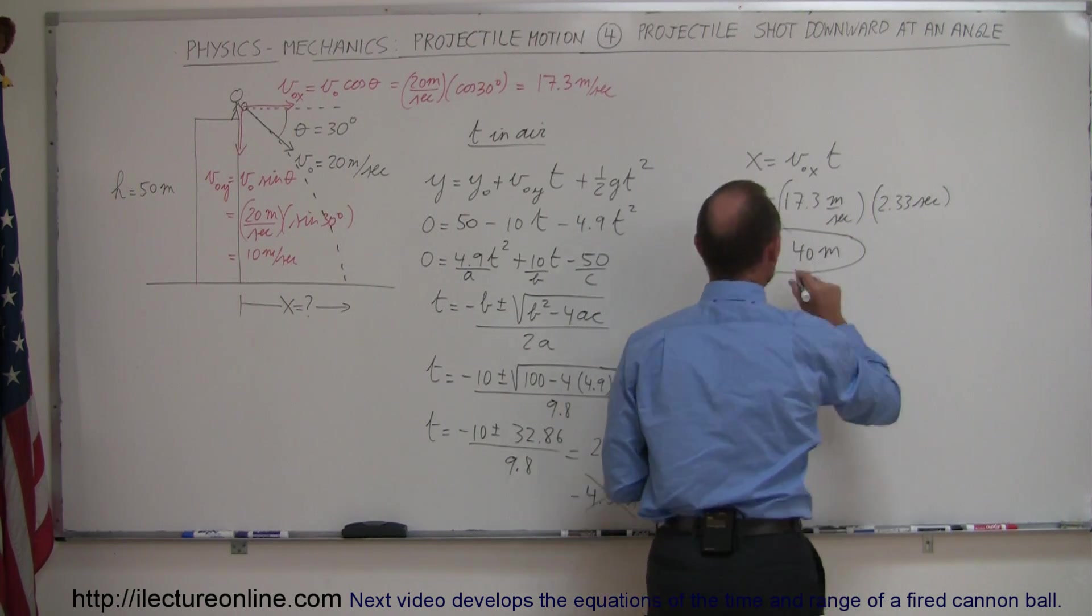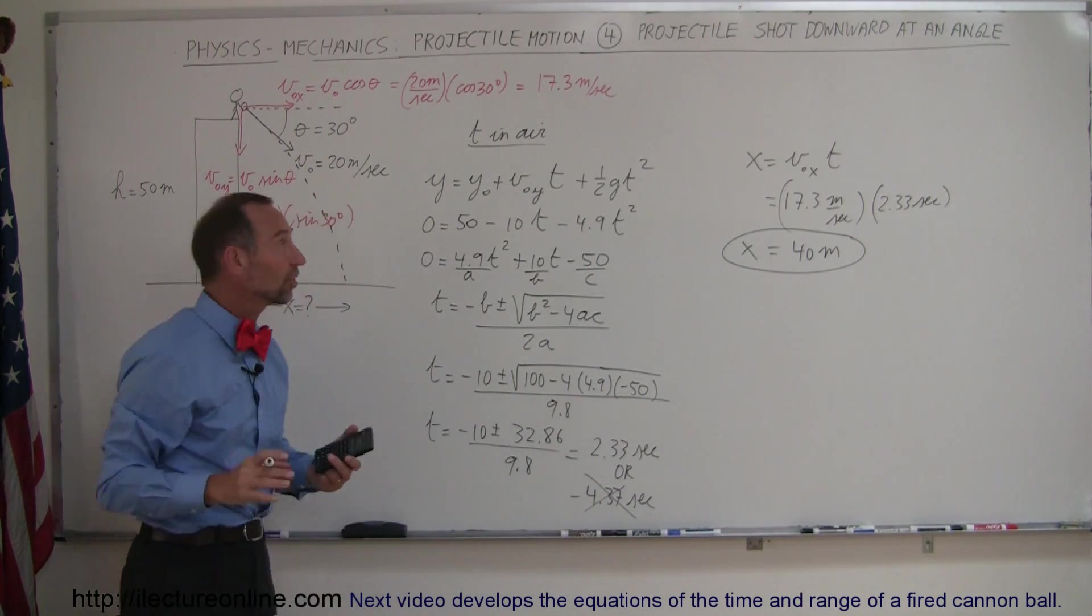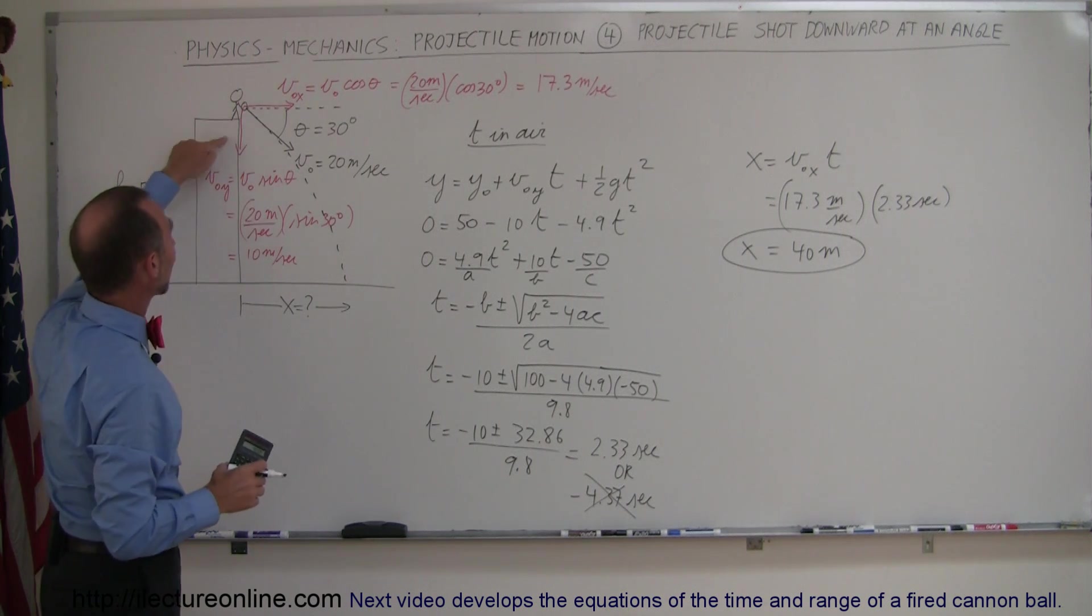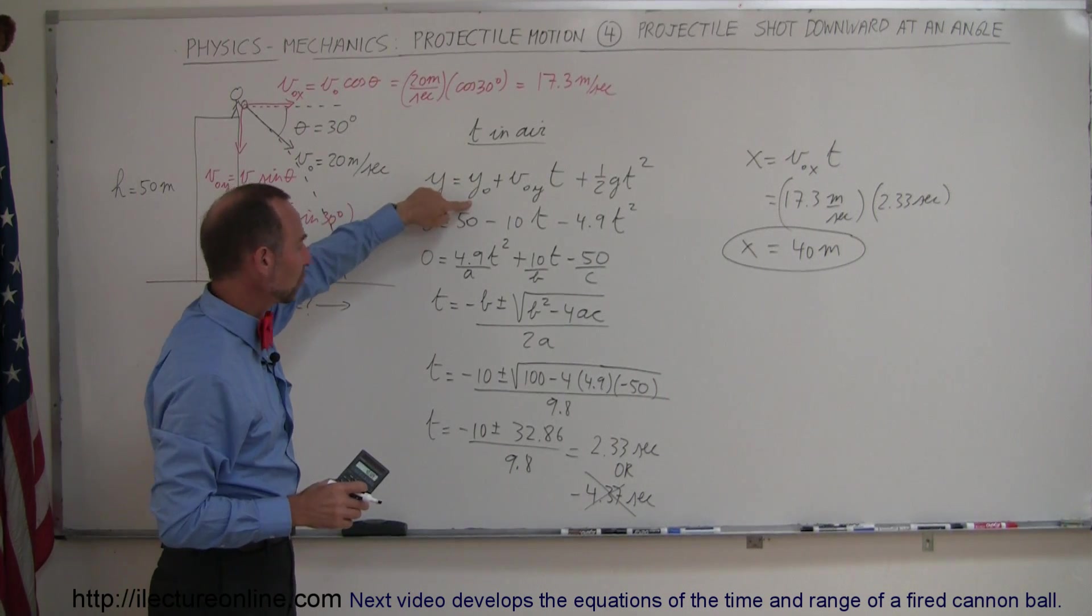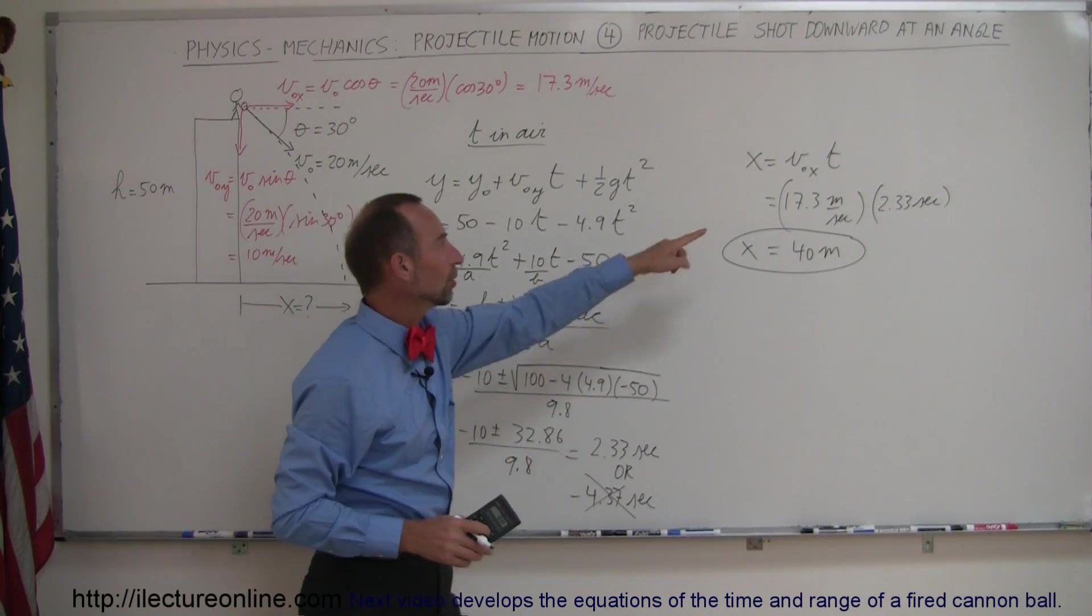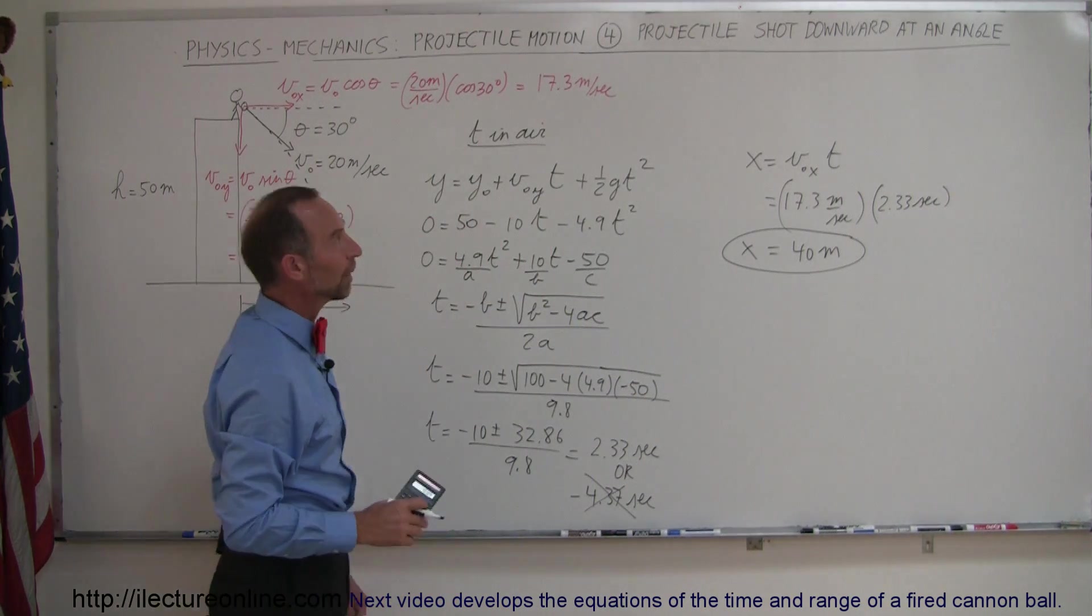And then for the distance, so 2.33 times 17.3 equals 40 meters, and that's the answer. So again, the approach is exactly the same. We first find the x and y components of the initial velocity, we then find the time in the air using this equation, once we have the time we plug it into this equation to find distance, and that's how you do that problem.